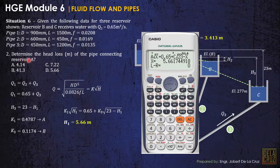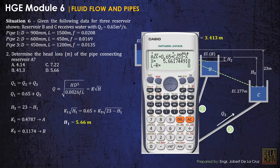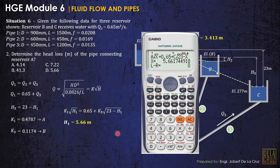So that is the answer for part 2. Determine the head loss of the pipe connecting reservoir A, so that is our pipe 1. This is the answer for part 2.